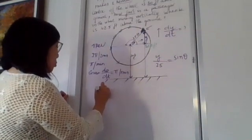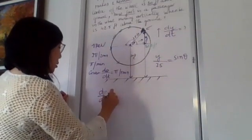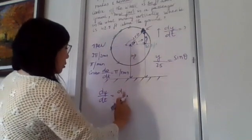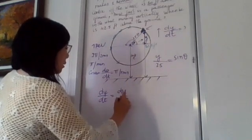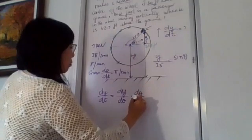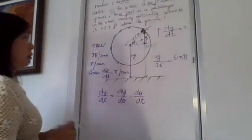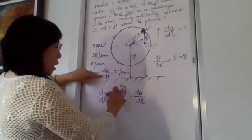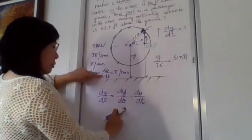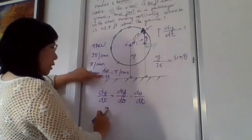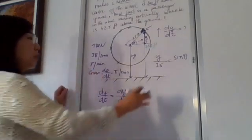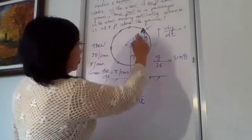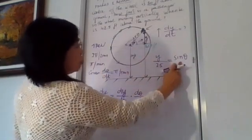Now we also know that dy over dt equals dy over d theta times d theta over dt, by the chain rule. We know d theta over dt is given, so now we have to find dy over d theta. Then we can get dy over dt. We relate this back to the angle: opposite over hypotenuse equals sine theta.